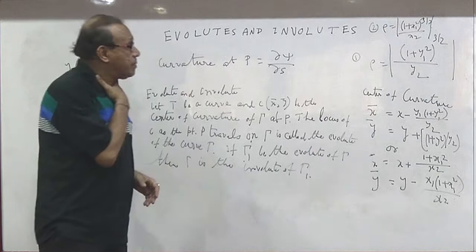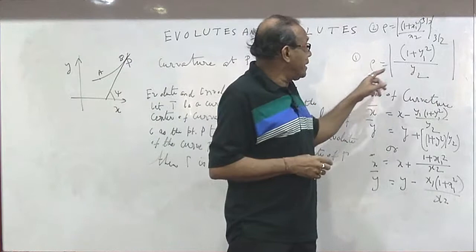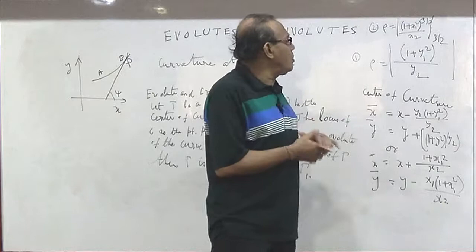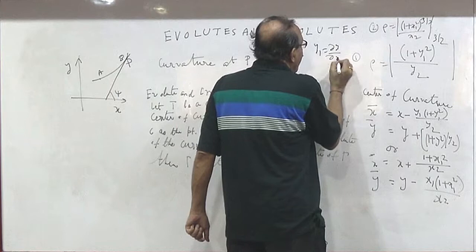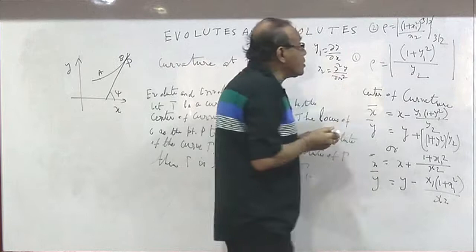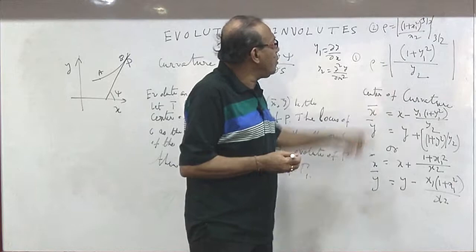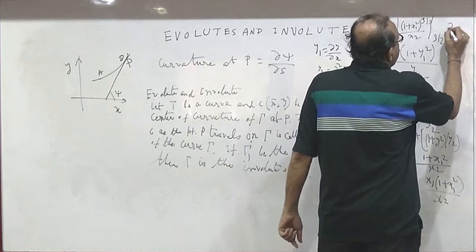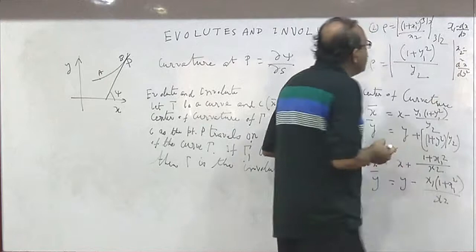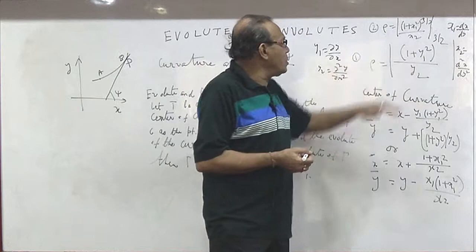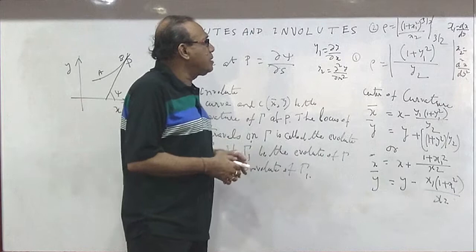Radius of curvature is ρ. The derivation is not in the syllabus, but we can derive it in class. ρ = (1 + y₁²)^(3/2) / |y₂|, where y₁ = dy/dx and y₂ = d²y/dx². I must assume y₂ ≠ 0 to apply this. Alternatively, with x₁ = dx/dy and x₂ = d²x/dy², we use the reverse formula, assuming x₂ ≠ 0. Take the magnitude in both cases.